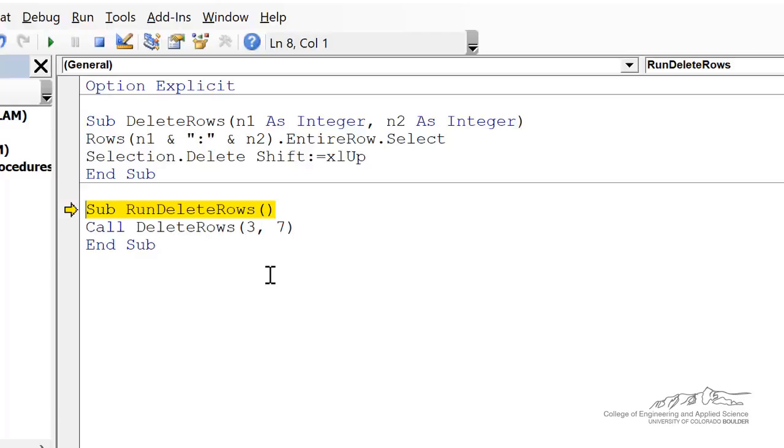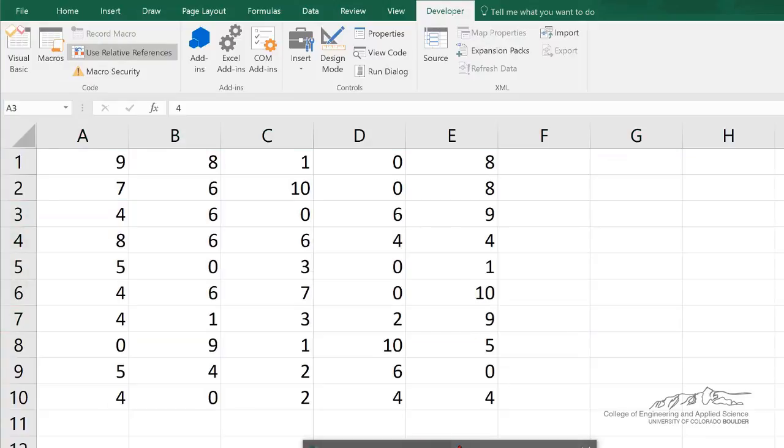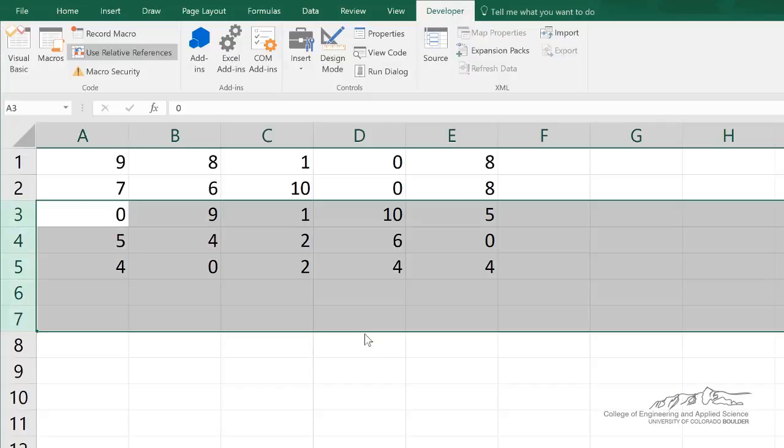If I run this sub using F8, you see that it jumps into the delete rows. We've passed arguments 3 and 7 into the sub on the spreadsheet. We're selecting rows 3 to 7 and then we can delete those rows. That's an example of a sub that might have arguments.